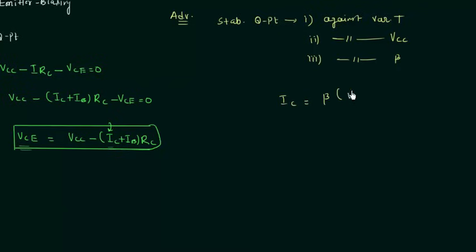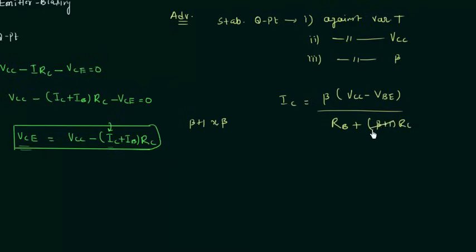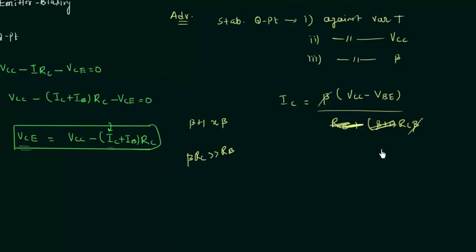IC equals beta times (VCC minus VBE) divided by [Rb plus (beta + 1) times Rc]. Since beta + 1 is nearly equal to beta, if beta times Rc is greater than Rb, we can neglect Rb. We are then left with Rc times beta in the denominator, and the beta in the numerator cancels with the beta in the denominator — so the expression becomes independent of beta. This is the third advantage.